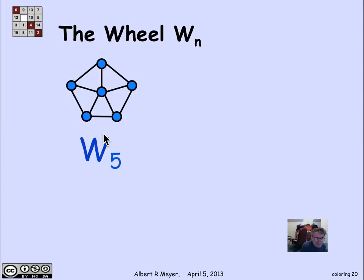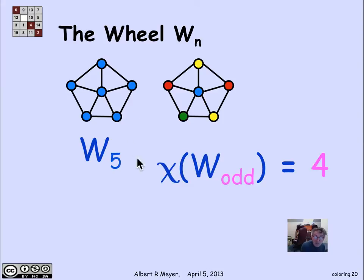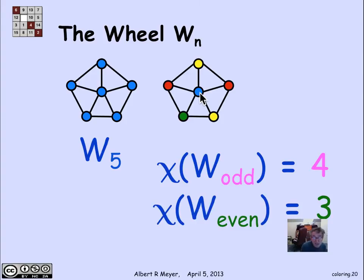Another example is a wheel graph: take a cycle and add an axle vertex in the middle. A wheel with a perimeter cycle of length five is called W5, and it can be colored with four colors. In general, an odd-length wheel requires four colors: three colors are needed for the rim, and since the axle is adjacent to everything on the rim, a fourth color is needed for it. If the perimeter is even, three colors suffice.